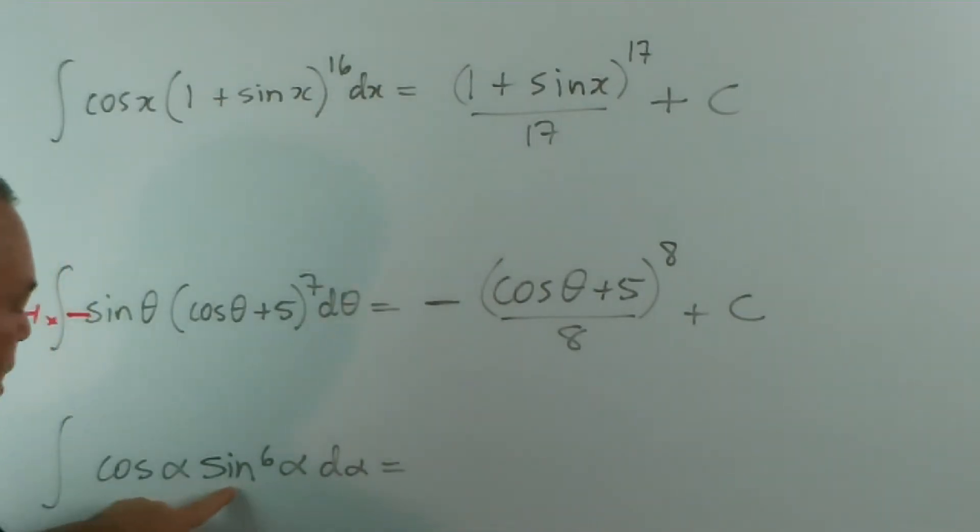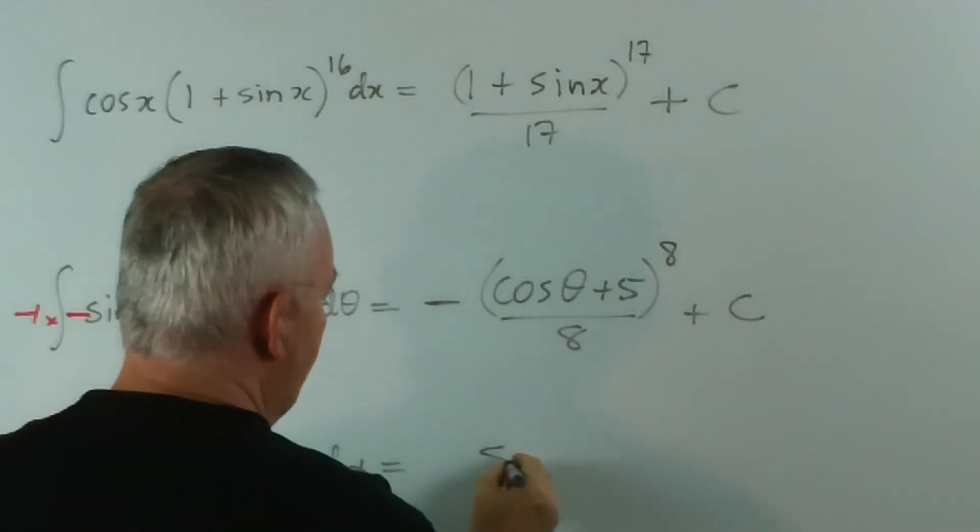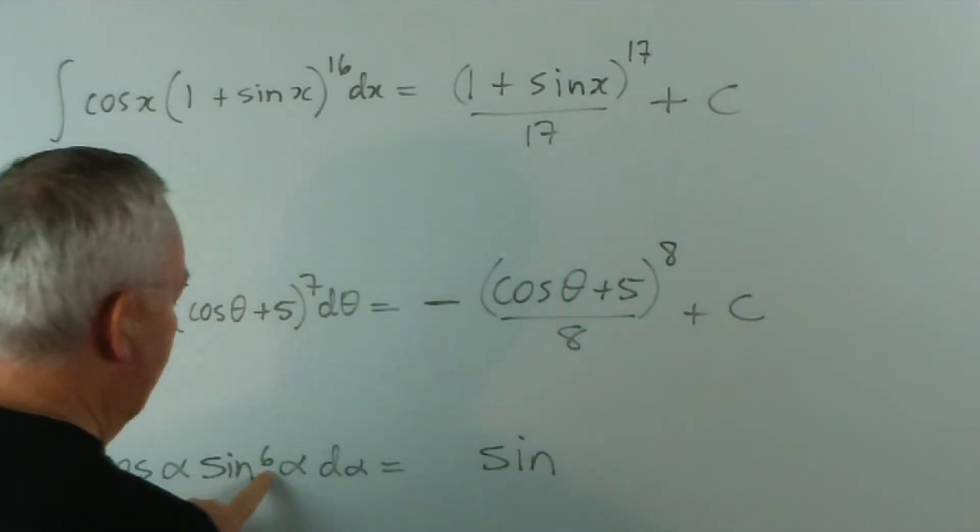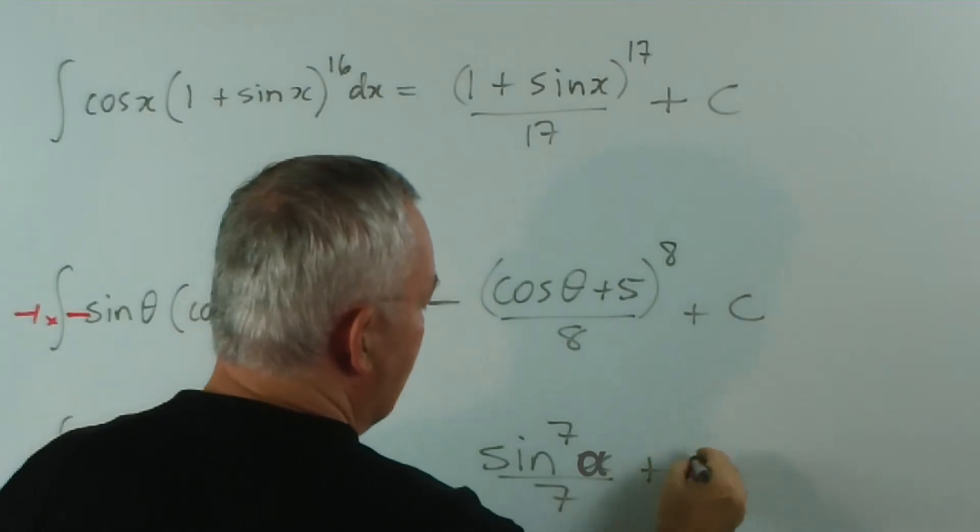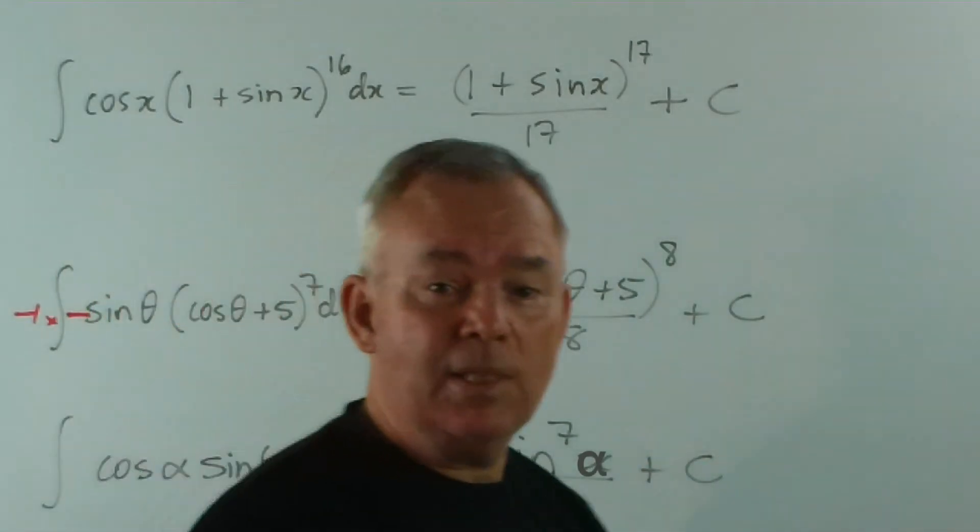This one, sin x is our basic function, so it's going to be sin. Instead of a power 6, it's now going to be power 7 over 7 plus c. How simple is that?